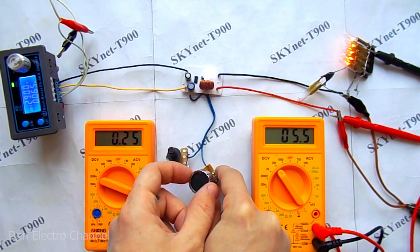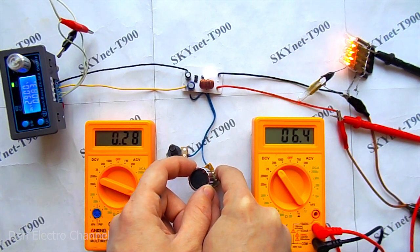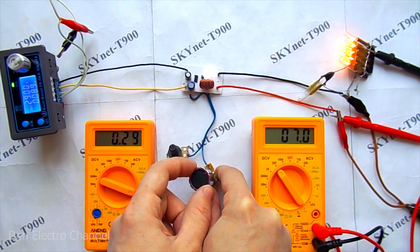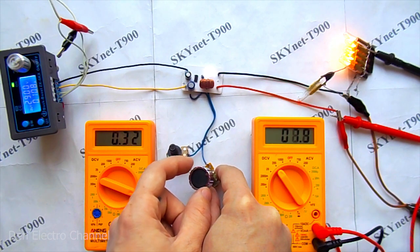If you connect a slightly smaller load in the form of several light bulbs, then the picture is completely different. The voltage rises a little more, reaches 11 volts, and everything turns off.